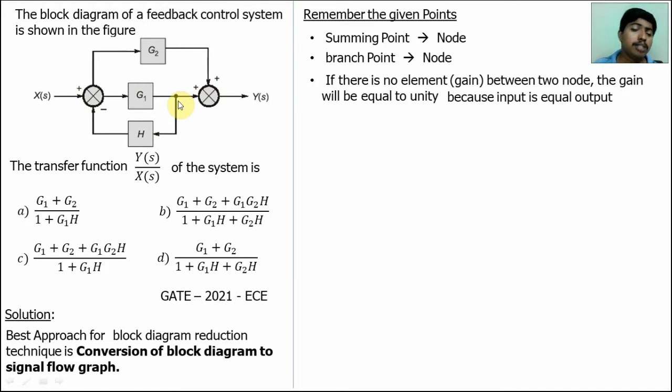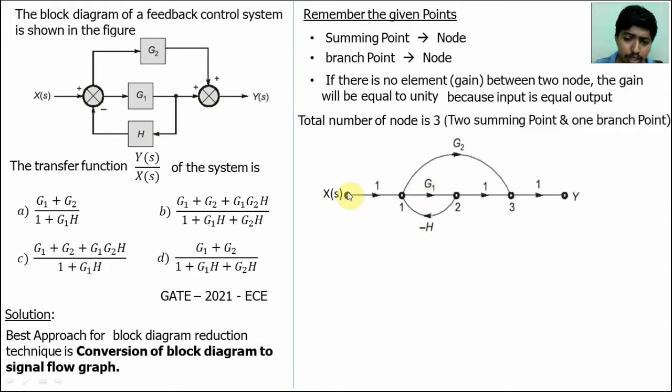So now convert this block diagram. In this block diagram, there is two summing points. There is one branch point. So totally three nodes. Because two summing point and one branch point. Now convert. This is input. This is output. One, two, three nodes. Because two summing point and one branch point.